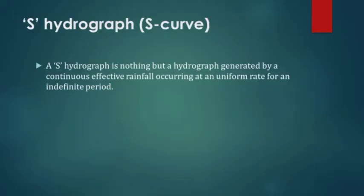The S hydrograph is nothing but a hydrograph resulting from continuous effective rainfall occurring at a uniform rate for an indefinite or infinite period of time.